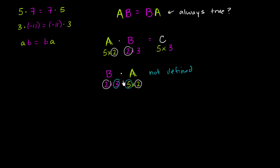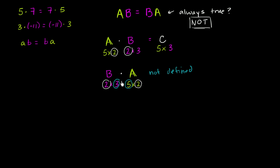This is already a pretty big clue that commutativity isn't always going to be true. Here AB is defined and gives a 5 by 3 matrix, while BA isn't even defined. So we're already seeing that order matters when you are multiplying matrices. To make things more concrete, let's look at a case where we're dealing with two 2 by 2 matrices — where both products are always defined — and see whether order still matters.